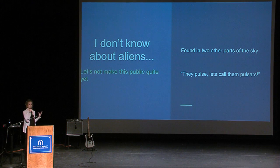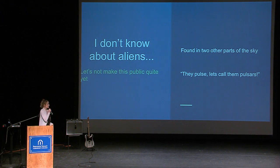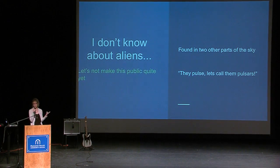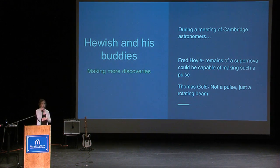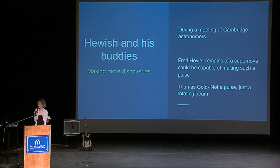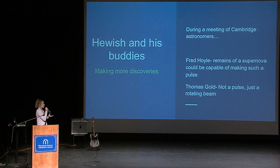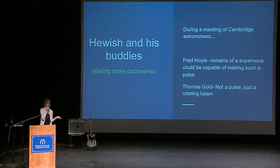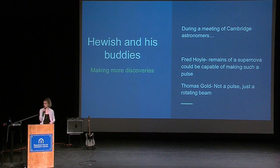They knew they had discovered something but didn't know what yet, so they decided not to make it public quite yet. Bell looked back over her 60 meters of data and found two other pulsating forces within two different parts of the sky, and said they pulse — let's call them pulsars. Their findings were going to be published in the Nature Journal, and Professor Hewish presented this information at a meeting of Cambridge astronomers. A colleague named Fred Hoyle stated that the remains of a supernova could be capable of making such a pulse. After Hoyle published his findings, Thomas Gold said it's not a pulse — it's just a rotating beam.